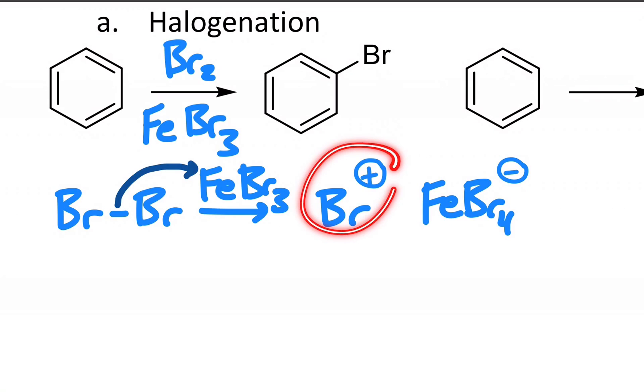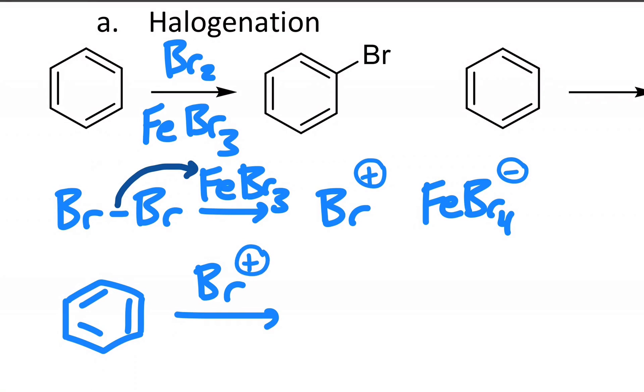So it's this species that's the active electrophile in this reaction. When something like benzene sees this, a virtually naked bromine cation is electrophilic enough to get attacked by the aromatic ring and break the aromatic pi system.